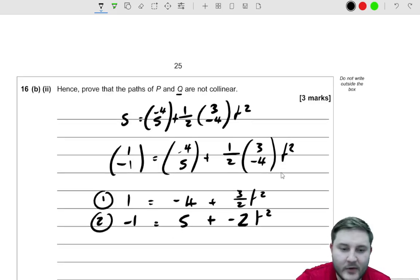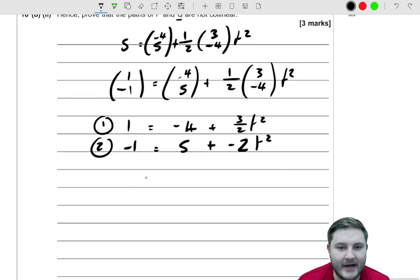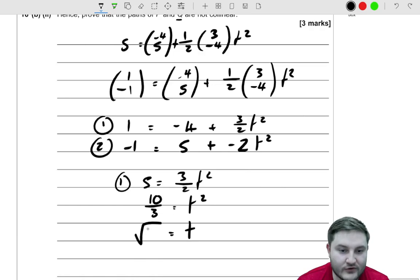So we can do a little bit of rearrangement on that first one. And by adding five to both sides, we get 5 is equal to 3/2 T squared, times by 2 and divided by 3. So we get 10/3 is equal to T squared. So T is equal to the square root of 10/3.